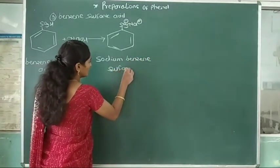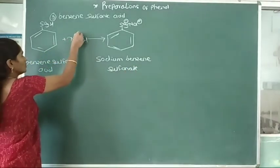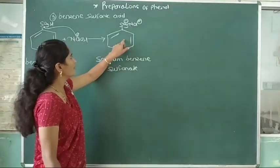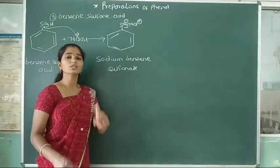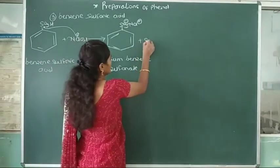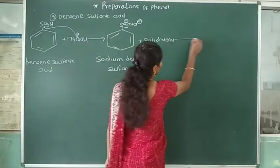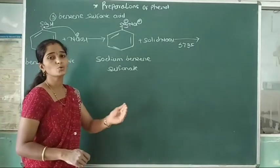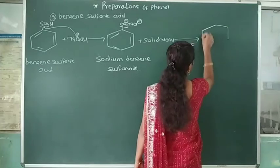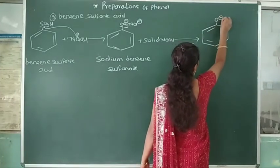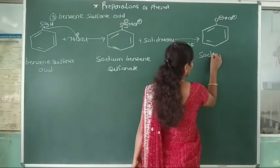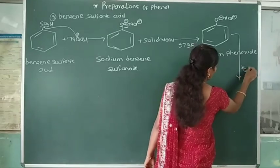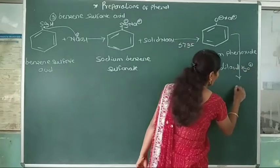Sodium benzene sulfonate is then fused with solid sodium hydroxide at 573 K temperature. This converts sodium benzene sulfonate into sodium phenoxide (O⁻Na⁺). The sodium phenoxide is then hydrolyzed in the presence of dilute acid to form phenol.